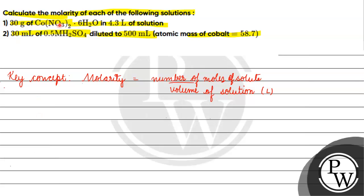So first, we have 30 grams of cobalt nitrate·6H2O in 4.3 liters of solution. We have the volume of solution and the mass of our solute, but we need the number of moles.